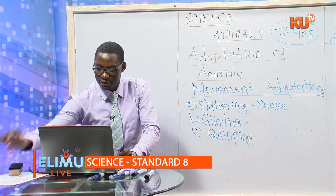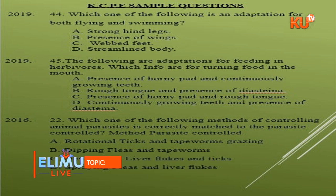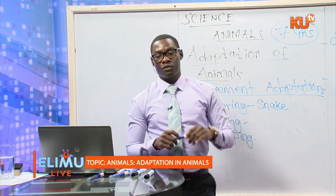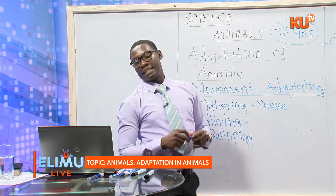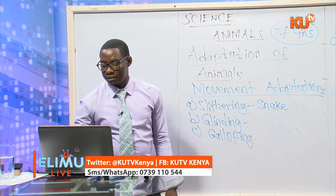Another question from 2019, number 45: The following are adaptations to feeding in herbivores — which ones are used for turning food in the mouth? The answer is rough tongue and presence of a diastema. The rough tongue is long and rough — long to hold food, rough to prevent injuries. The diastema enables food to turn continuously. So the right answer is rough tongue and presence of a diastema.